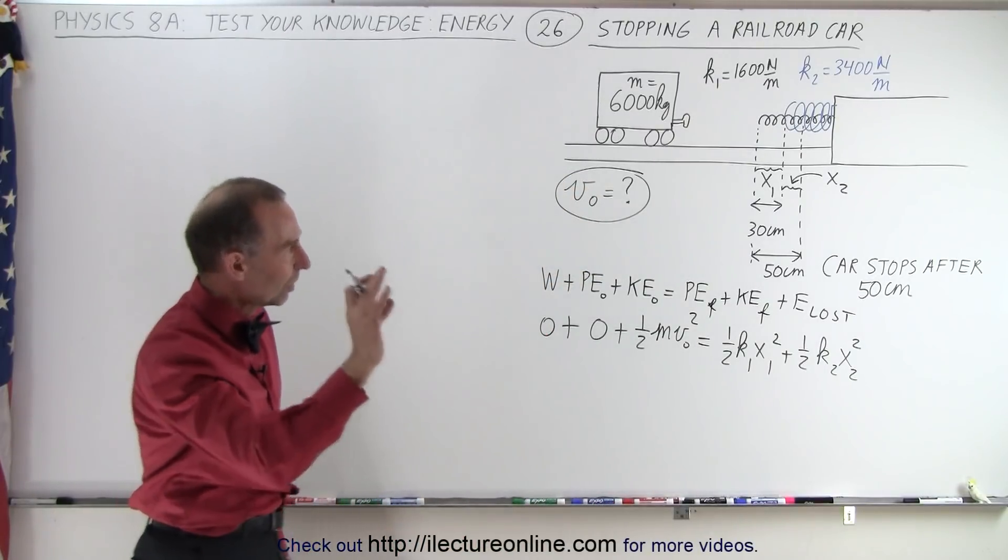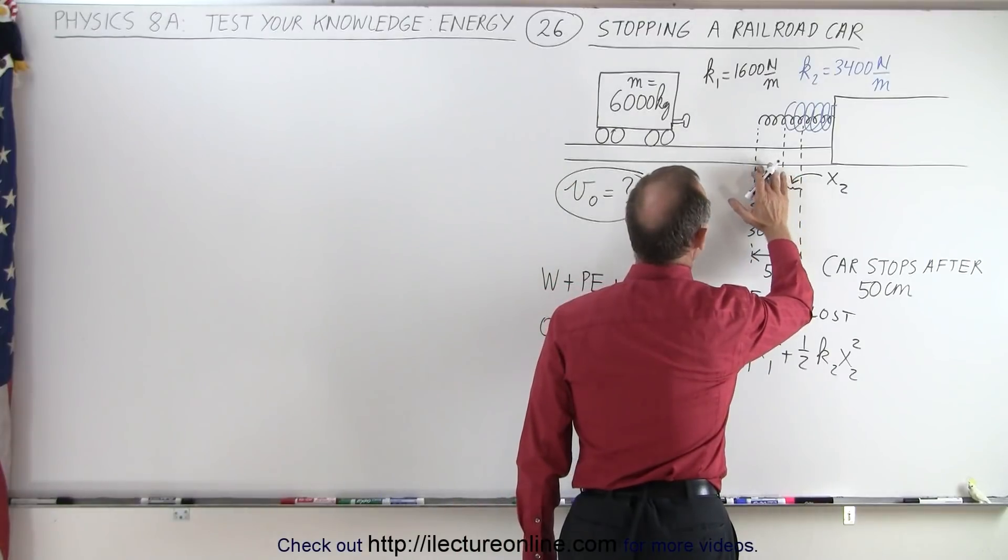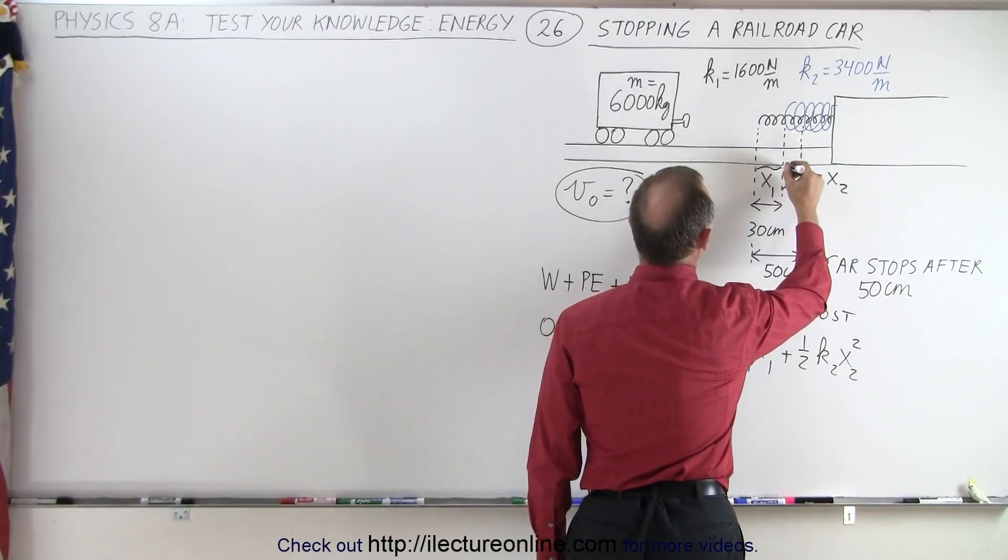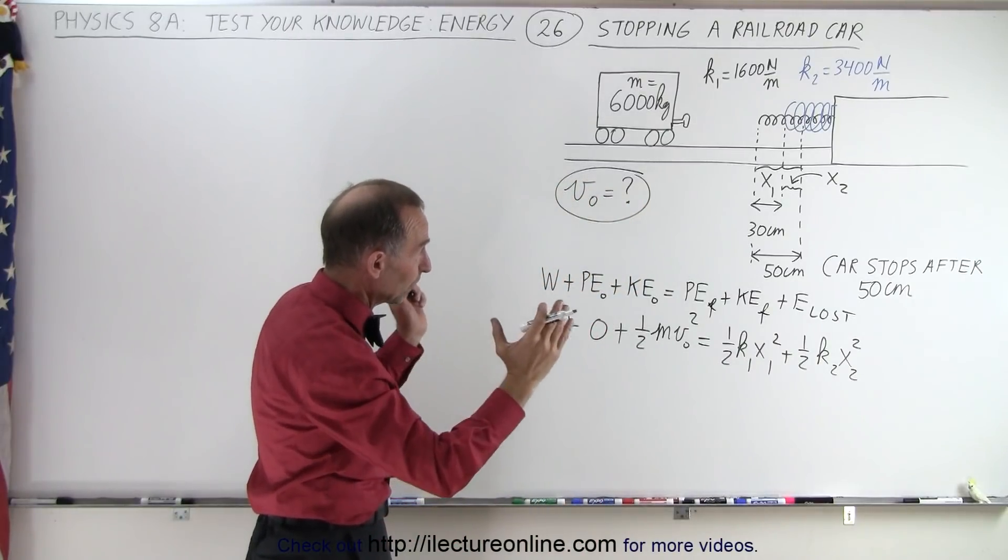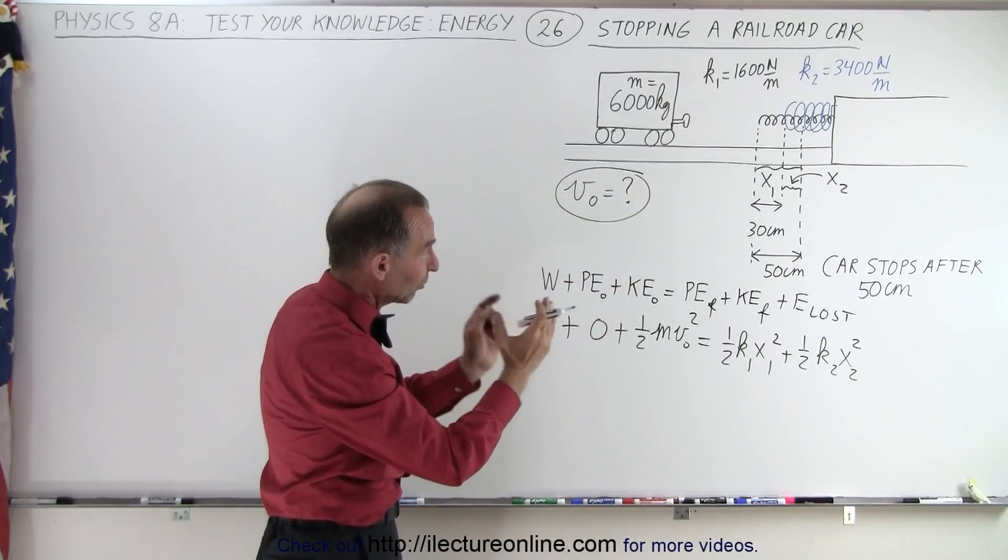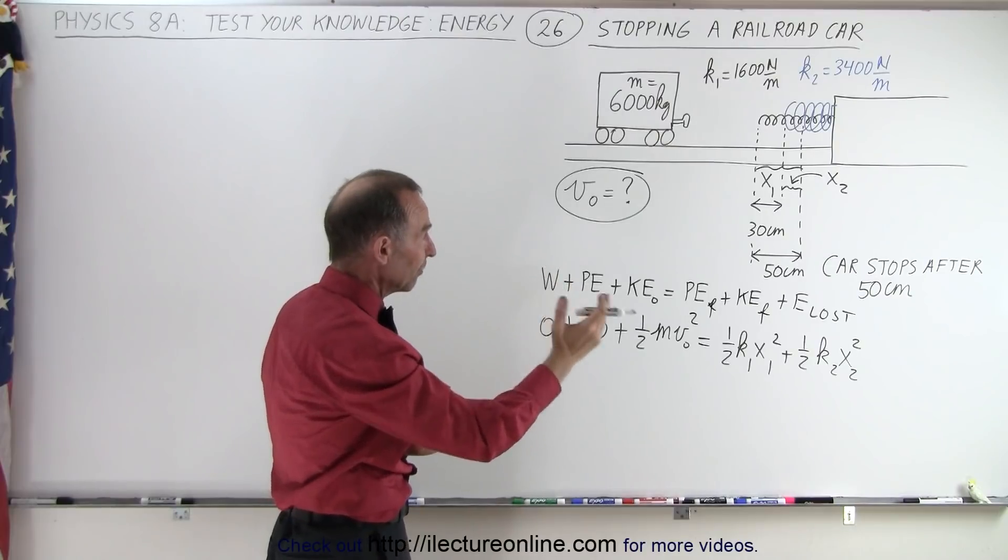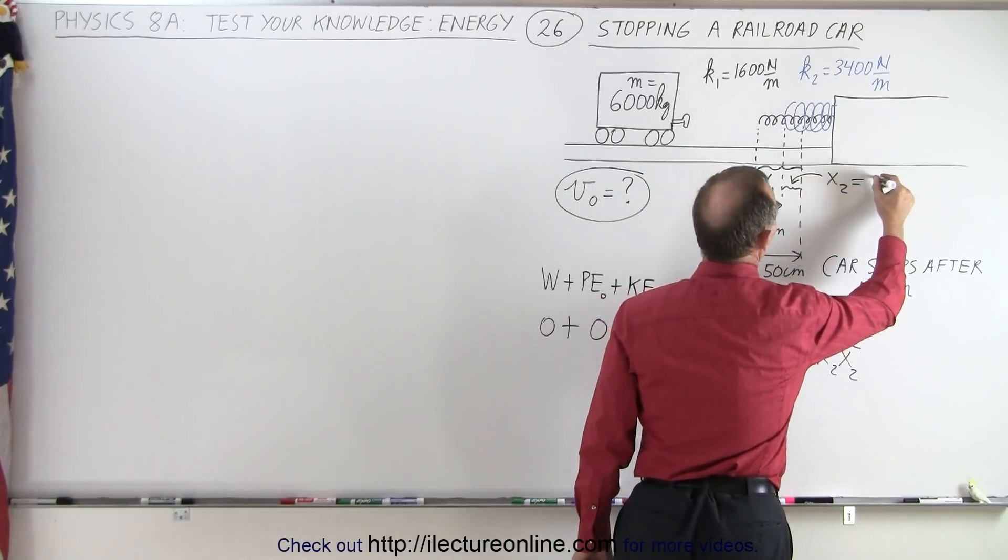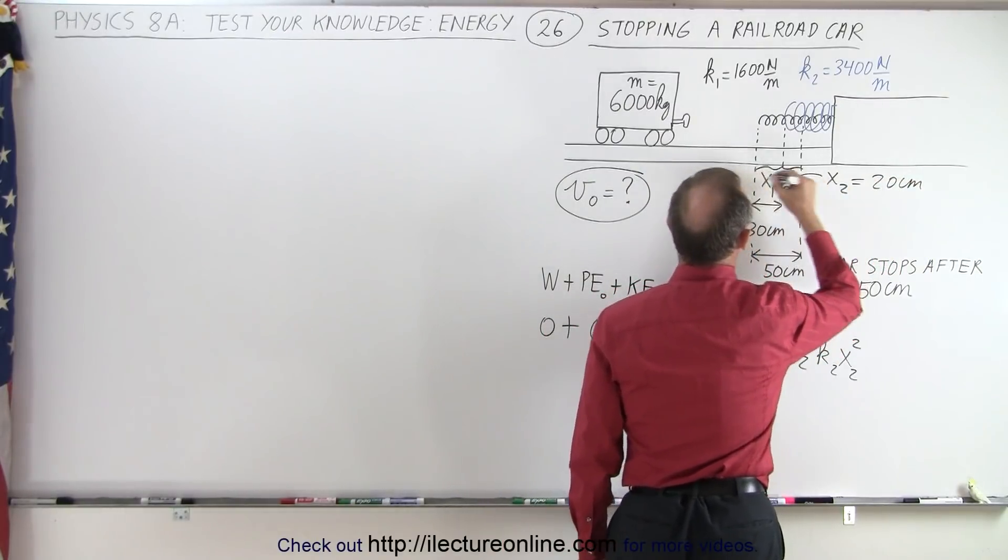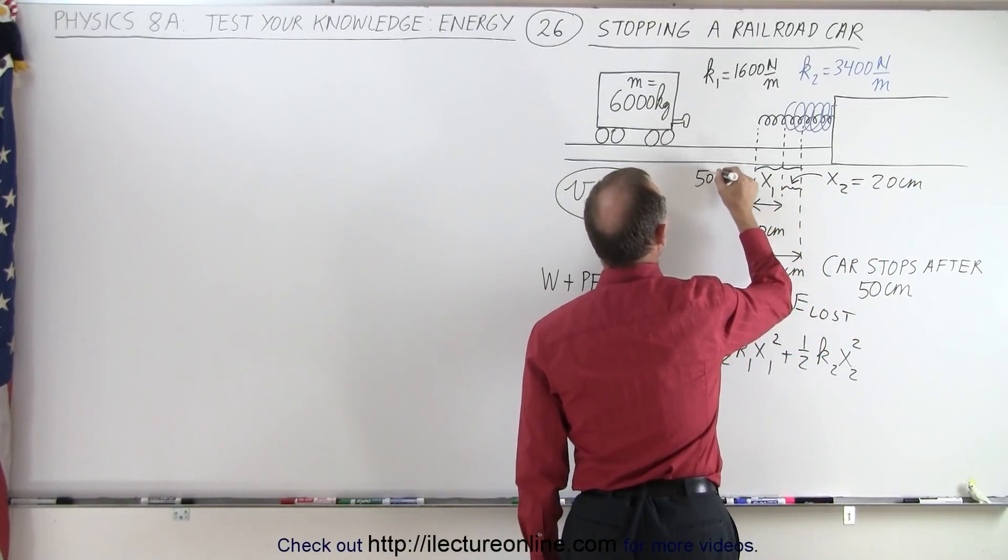Oh nope, that's not x1. x1 is the total distance, so this here would be x1 and that's x2. That's a better way to look at it. So the first spring compresses 50 centimeters, the second spring only compresses the difference between 50 and 30, which is 20 centimeters.